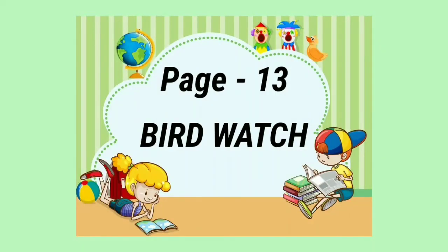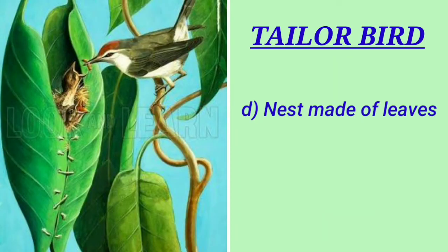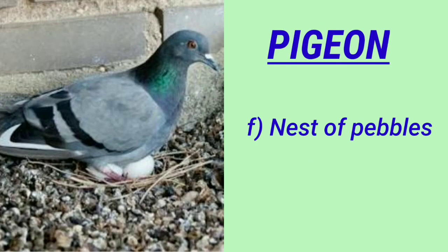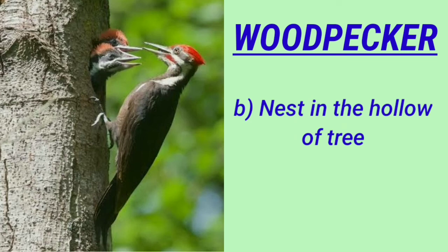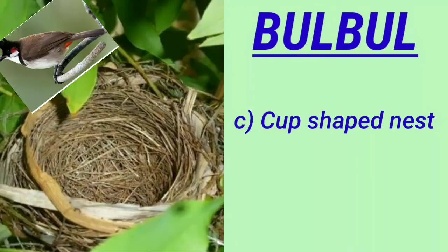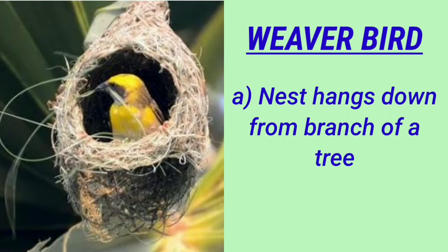Wasn't that video interesting? We will use the information on page number 13. The tailor bird makes a nest of leaves. Pigeon makes a nest of pebbles. Coil does not make a nest. Woodpecker makes a nest in the hollow of a tree. Bulbul makes a cup-shaped nest. The nest of the weaver bird hangs down from a branch of a tree.